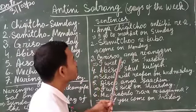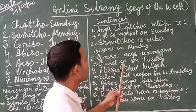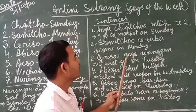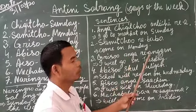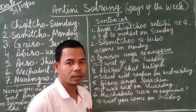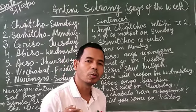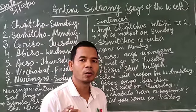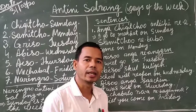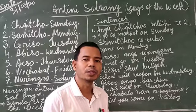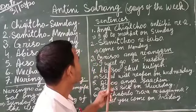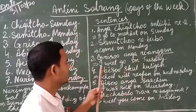Number three: grisho anga reabao game — I will go on Tuesday. Grisho means on Tuesday, anga means I, reabao game means will go. When you see or hear 'game,' this means it is a future word. Reabao game means you will go. So I will go on Tuesday — anga reabao game.